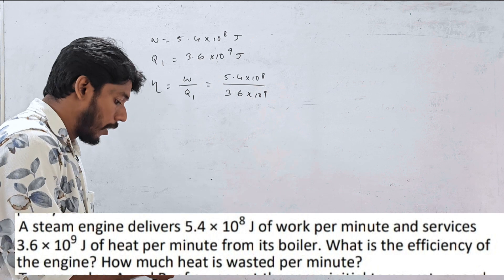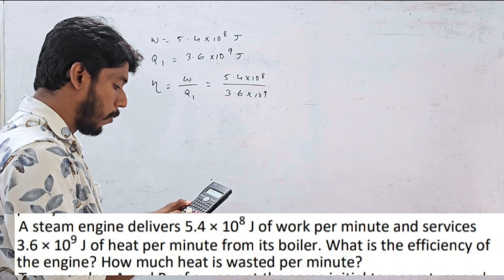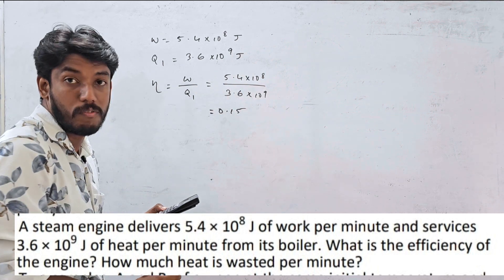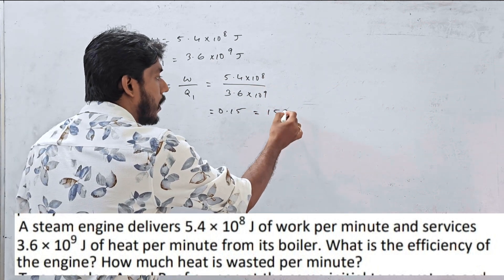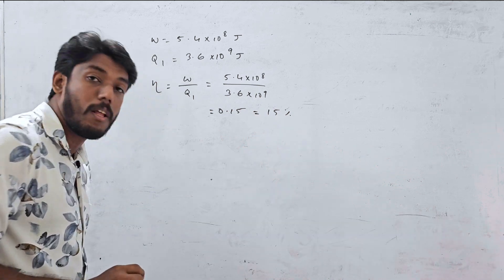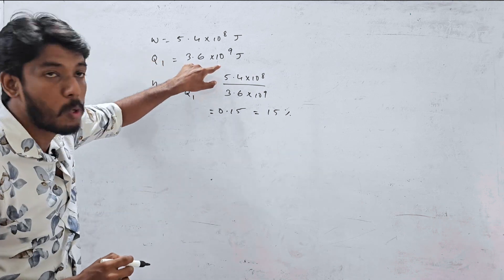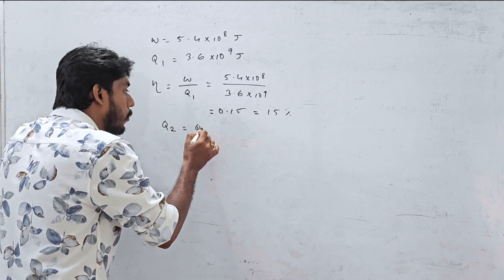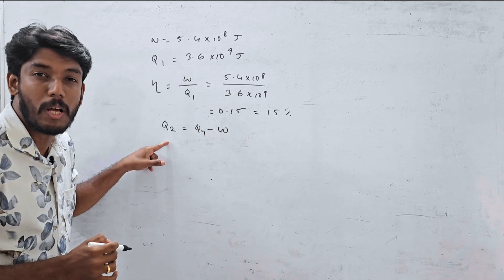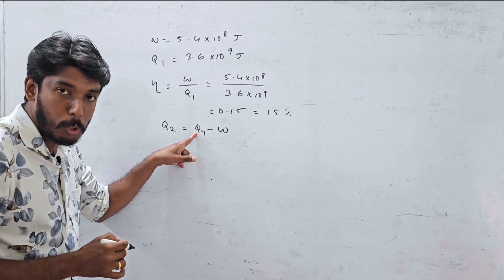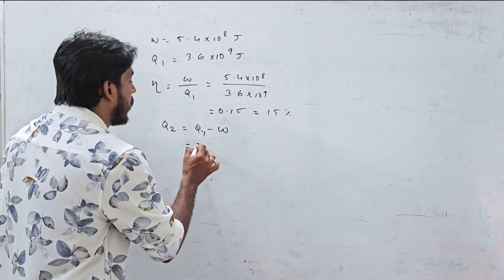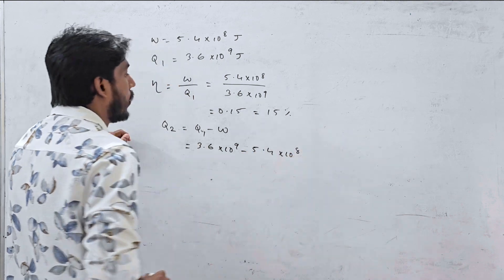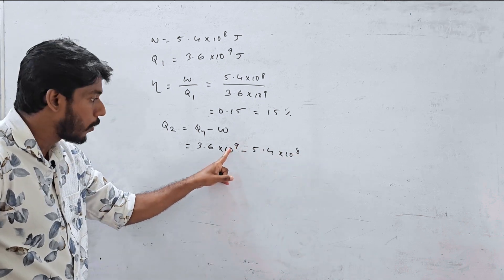W is 5.4×10⁸ divided by Q1 = 3.6×10⁹. Calculating 5.4 divided by 36 gives 0.15. So the efficiency is 0.15, or 15%.